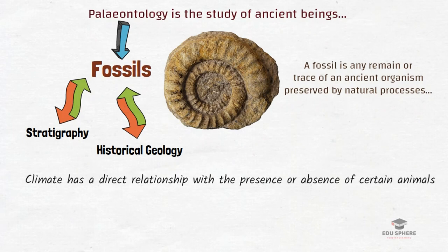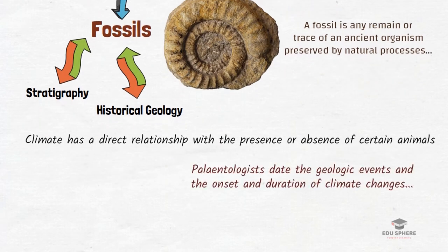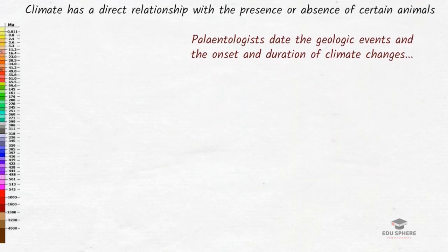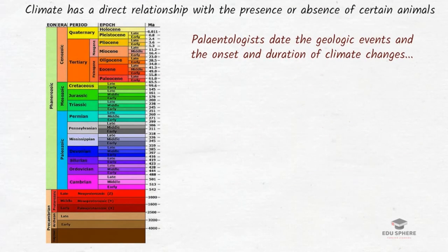Climate also has a direct relationship with the presence or absence of certain animals. Paleontologists reconstruct past climate changes and link them to possible causes of geological events, enabling scientists to date geological events and the onset and duration of climate changes as precisely as possible. The layers can then be analyzed and a graph of climate change in a particular region can be constructed. This table represents a geologic time scale with four major eras: Precambrian, Paleozoic, Mesozoic, and Cenozoic, broken down into periods.